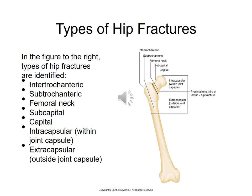This slide identifies the different types of hip fractures and where they exactly occur. Osteoporosis is the biggest risk factor for hip fracture. Types include intertrochanteric — which occurs most often — subtrochanteric, femoral neck fracture, sub-capital, capital intercapsular (within the joint), and extracapsular (outside the joint). This figure is on page 1042.